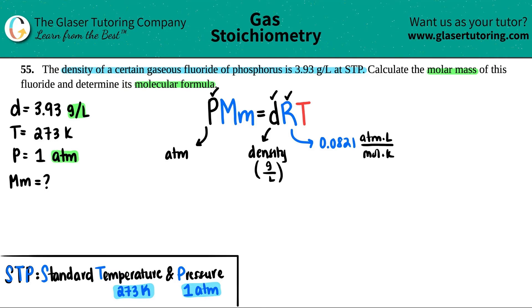We always know the R value. The density, thank goodness, they told us that. And remember, when we're using the density formula in this equation, it has to be grams per liter. If it was grams per mil or any other thing that is not grams per liter, you have to convert it first. But thank goodness they gave us that. And the temperature, we have to have it in Kelvin. So that's STP. The easiest one to know is that it's 273 Kelvin.